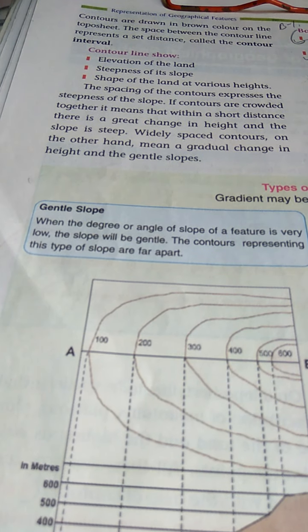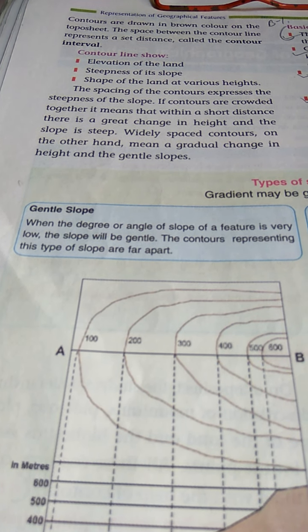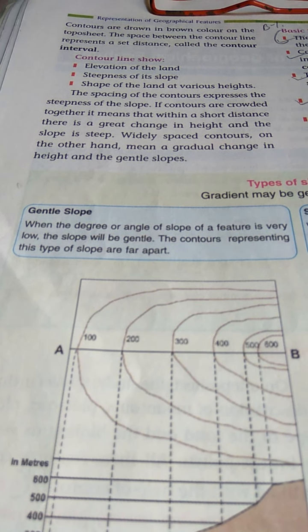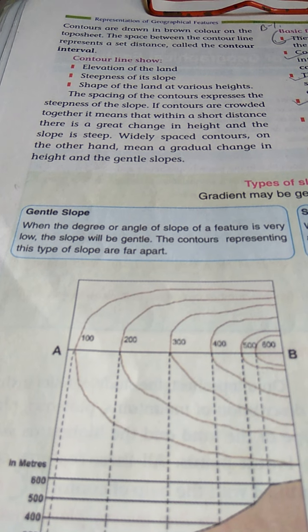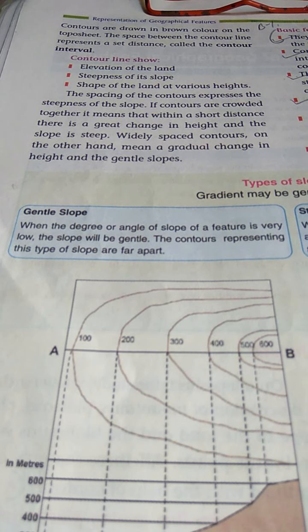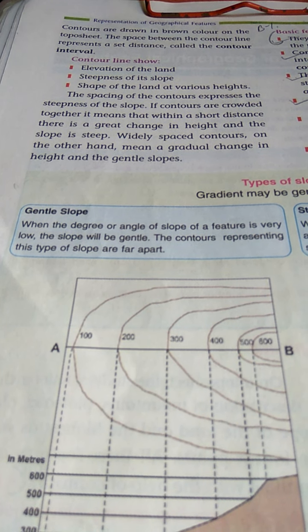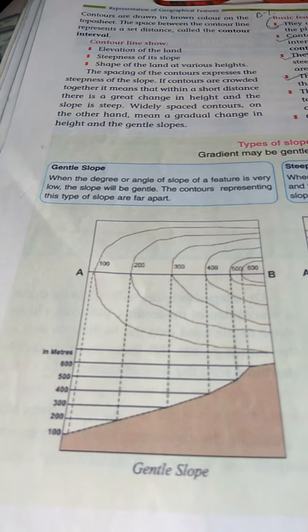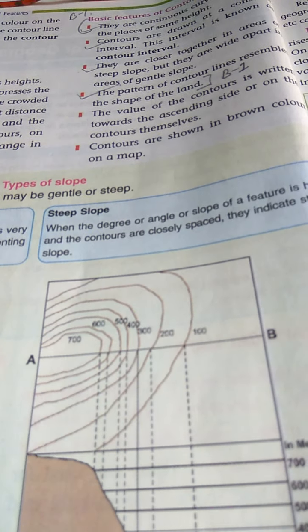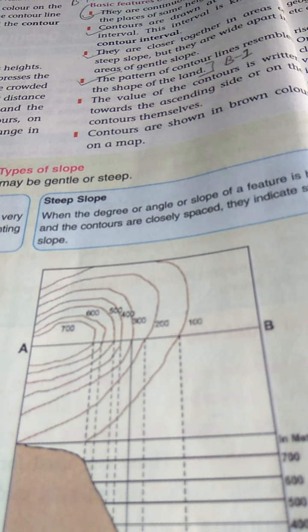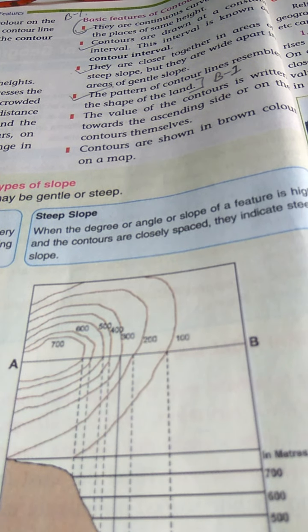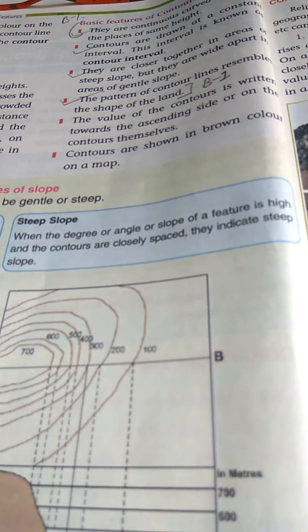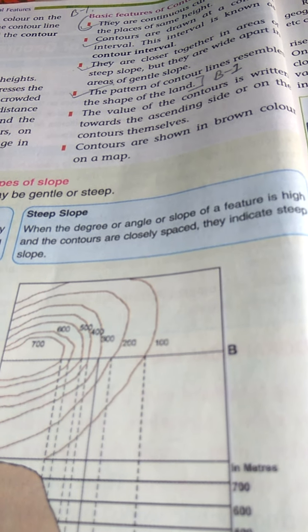First of all, it is gentle slope. When the degree or angle of slope of a feature is very low, the slope will be gentle. The diagram is given. The second one is steep slope — when the degree or angle of slope of a feature is high, the contours are closely spaced, indicating steep slope. That diagram is also given.